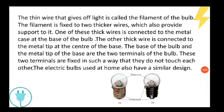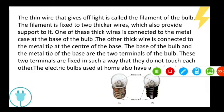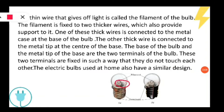Let's talk about the structure of an electric bulb. Inside the bulb, there is a thin wire present. We call it the filament of the bulb, and this is the part of the bulb which glows. This filament is made of tungsten metal. The filament is connected with two thick wires which provide support.